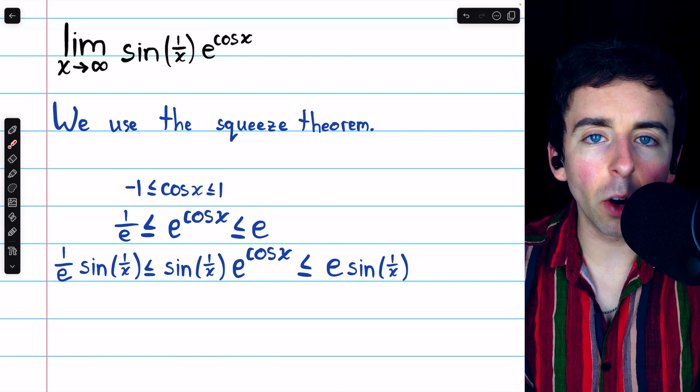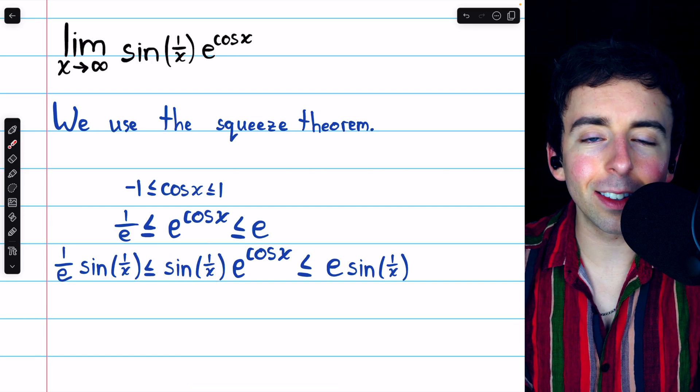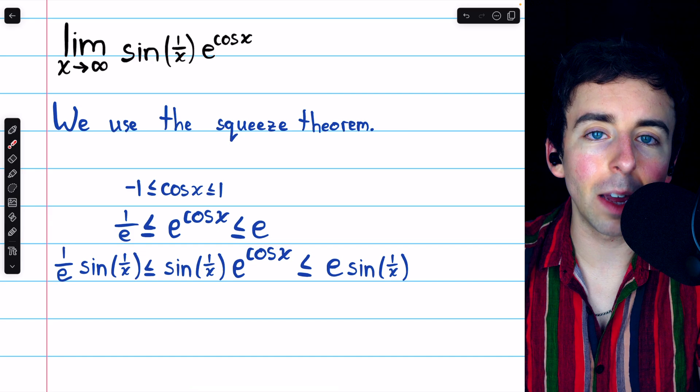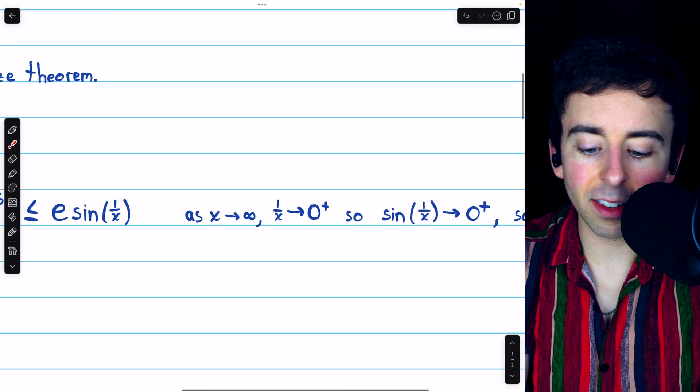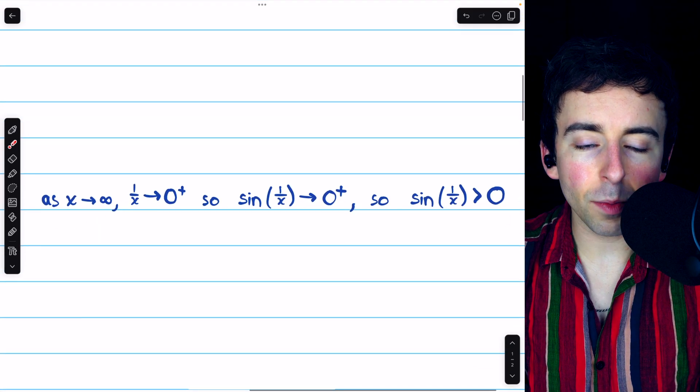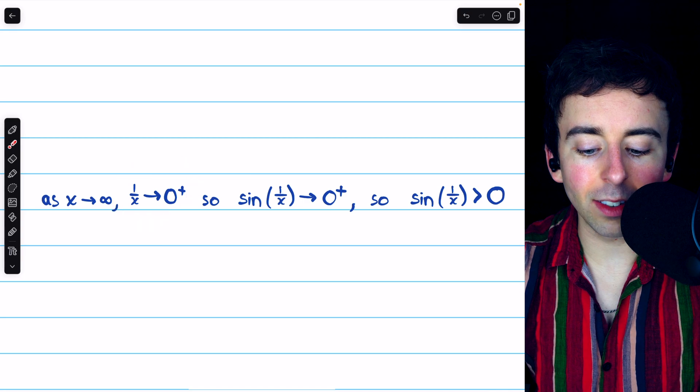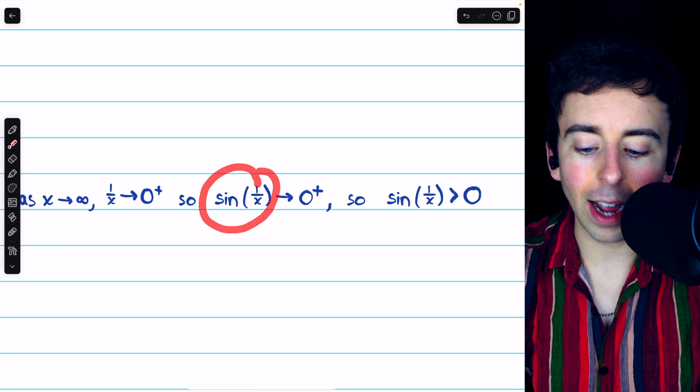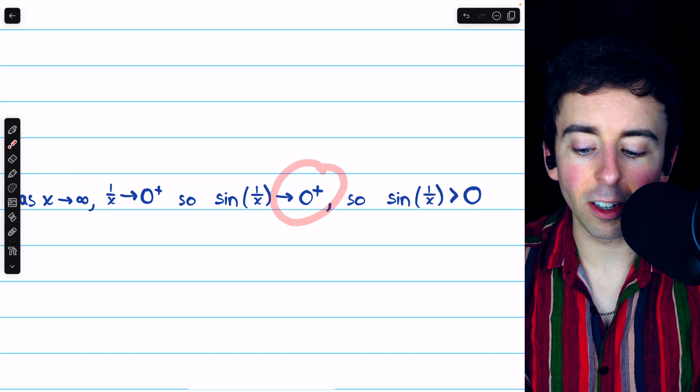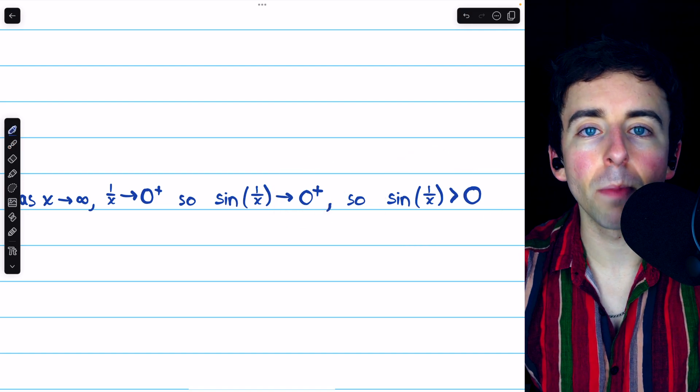Now, you may ask, how do we know we can just multiply by sine of 1 over x like this? How do we know that it's not negative and may flip the direction of the inequalities? Well, that's basically because x is approaching positive infinity. As x approaches positive infinity, 1 over x is approaching 0 from the right, which means that sine of 1 over x will also be approaching 0 from the right, and so sine of 1 over x must be positive.